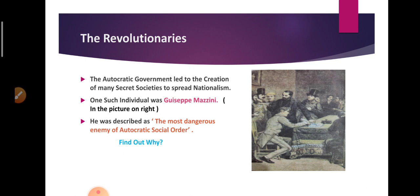Here is a task for you all. There is a person shown in the picture, also found in your book — you can see his name in the slide. He was called the most dangerous enemy of the autocratic social order. Why was he called this? You have to find out — that is one of the homework tasks. The rest of the homework will be uploaded on the portal. In the next class, we will be discussing all the revolutions that took place during the period of 1830 to 1848. That is all for today. Everyone have a nice day.